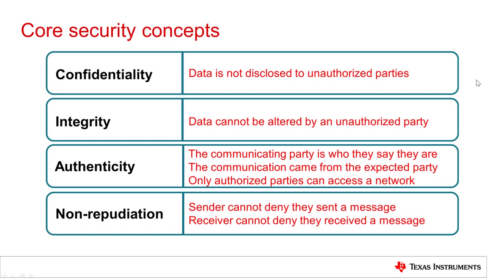The final concept is authenticity, and that has several aspects to it. The first is that you know the communicating party you're communicating with is exactly who they say they are. The second is that any communication in a conversation with that party always came from that party. Finally, you need the ability to make sure that only authorized parties can access a network. There is a fourth concept called non-repudiation — not so much a security concept but a legal one — meaning a sender cannot deny they sent a message, and a receiver cannot deny they received one.